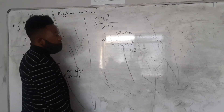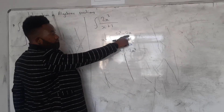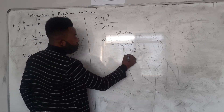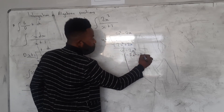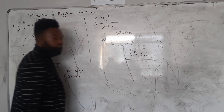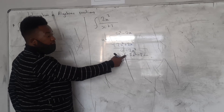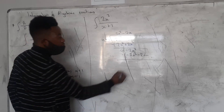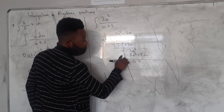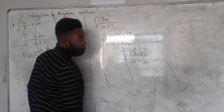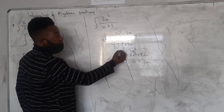Then I multiply negative 2x by the divisor x plus 1 — remember you already have a negative sign outside. So negative 2x times x gives negative 2x squared, and negative 2x times 1 gives minus 2x. Negative and negative gives a positive, so we get plus 2x squared, giving 0 there, and minus and minus gives plus 2x. Dividing 2x by x gives plus 2.